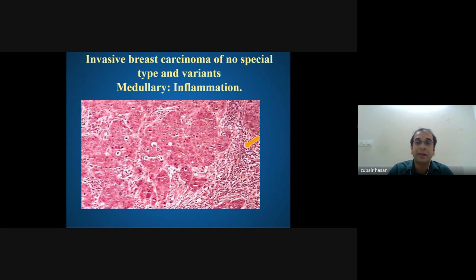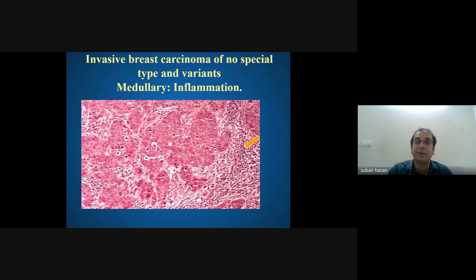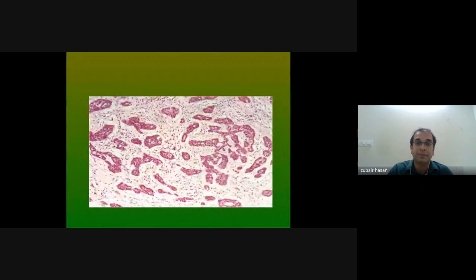The two most common types of breast cancer are infiltrating ductal carcinoma (IDC) and infiltrating lobular carcinoma (ILC). In infiltrating lobular carcinoma the cells are arranged in an Indian file pattern — single cells in a targetoid arrangement. Medullary carcinoma is now called invasive breast cancer of no special type — a very recent update.